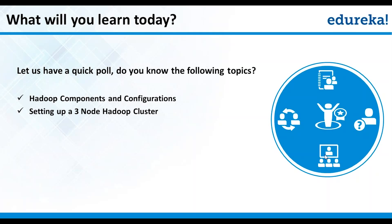One introductory question: what is the difference between Hadoop cluster architecture and a client architecture? Basically, on your cluster you'll have all the daemons running. On your client, you'll have the same application or the same package, but you'll not have any daemons running — you just have the APIs. The communication from the client is a client-server architecture where the client will have the APIs. You have your HDFS API, you have your MapReduce API. The communication happens via the APIs.